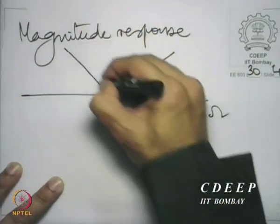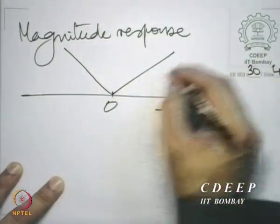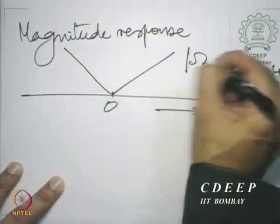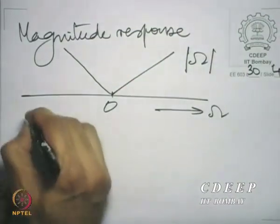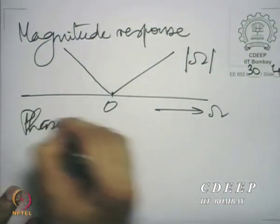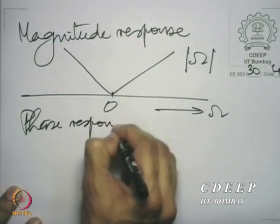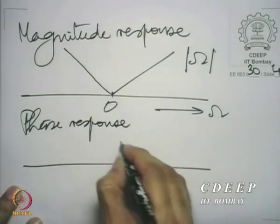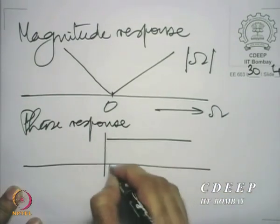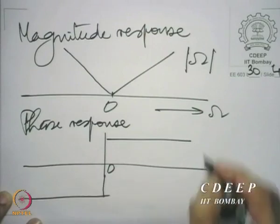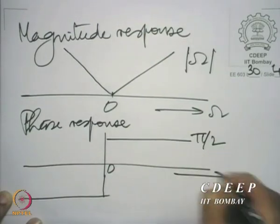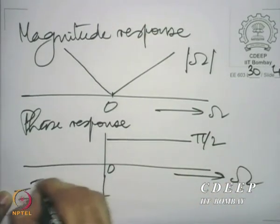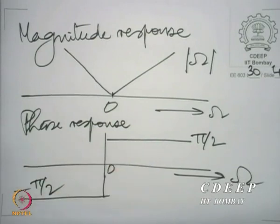We can draw the magnitude and phase response. The magnitude is linear — |omega| is the magnitude. The phase response is equally easy to draw: it is +pi/2 for omega greater than 0 and -pi/2 for omega less than 0.